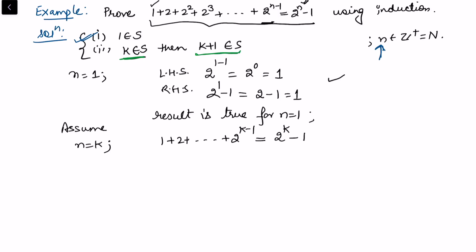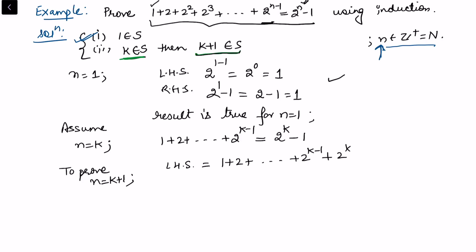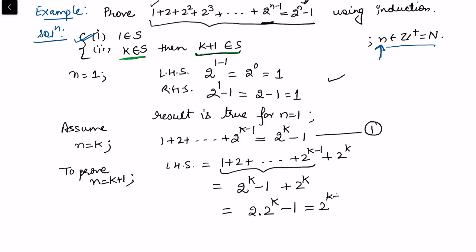We want to prove that k plus one belongs to S. To prove the result for n equals k plus one, the left hand side is 1 plus 2 plus up to 2 to the power k minus one, plus 2 to the power k. Using equation 1, this becomes 2 to the power k minus 1 plus 2 to the power k, which equals 2 times 2 to the power k minus 1, which equals 2 to the power k plus one minus 1. This is exactly what we required.